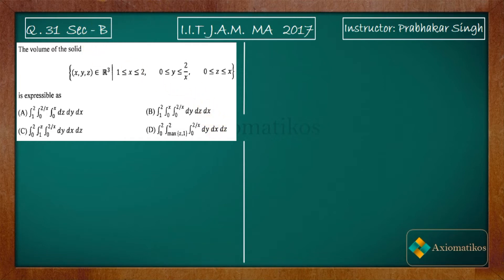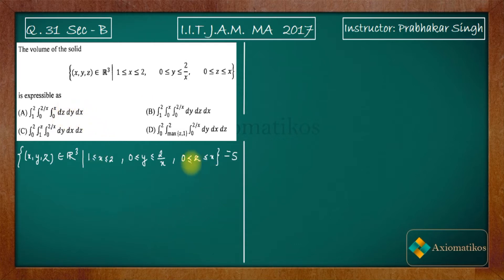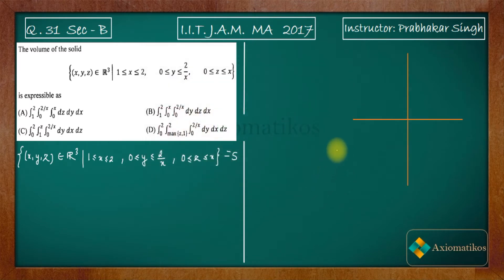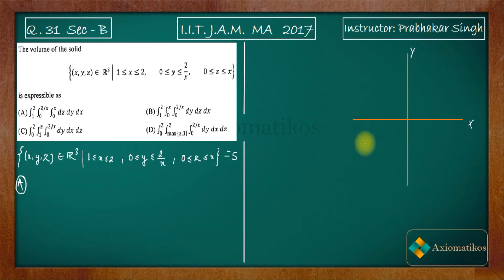Let us try to write this solid. For the order dz dy dx, it is clear that z moves from 0 to x. Let us draw a two-dimensional figure — there is no point drawing three-dimensional since the limits are very clear. So this is our xy-plane for Option A.